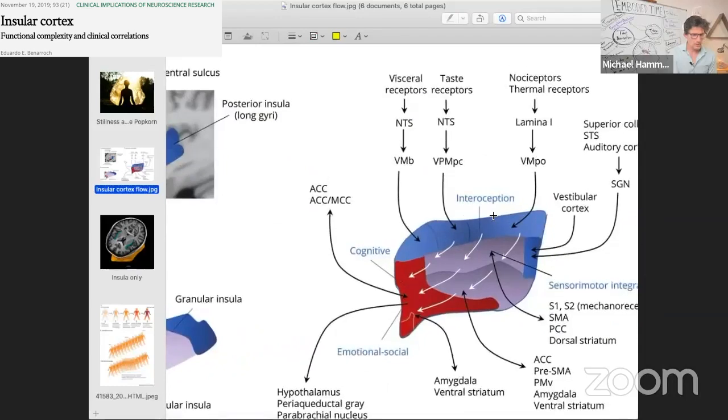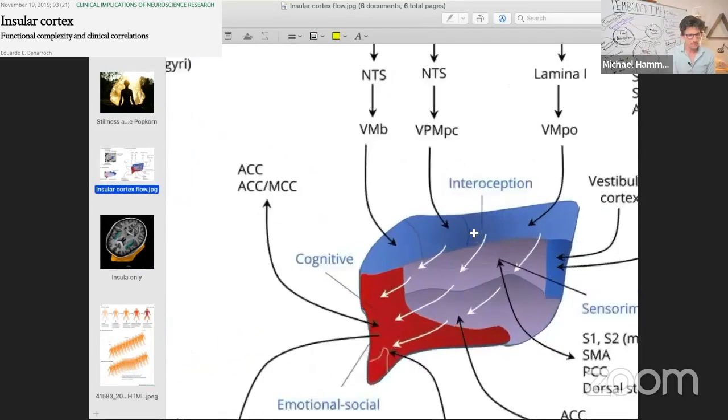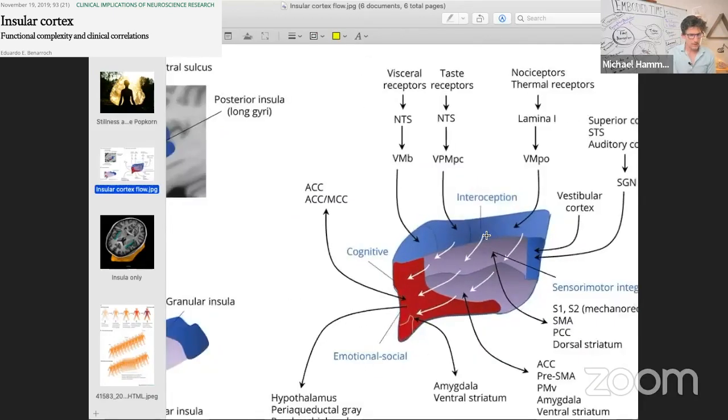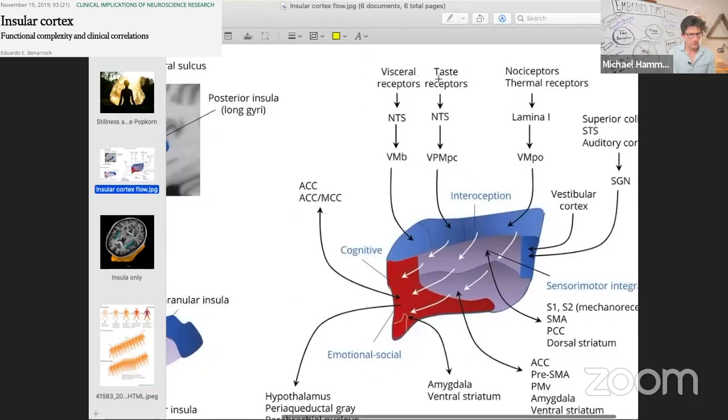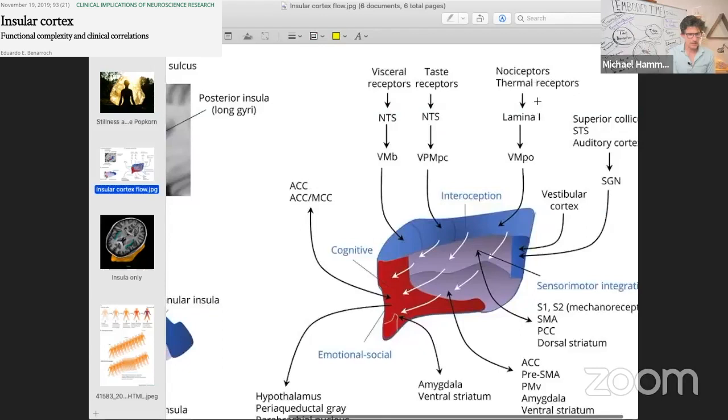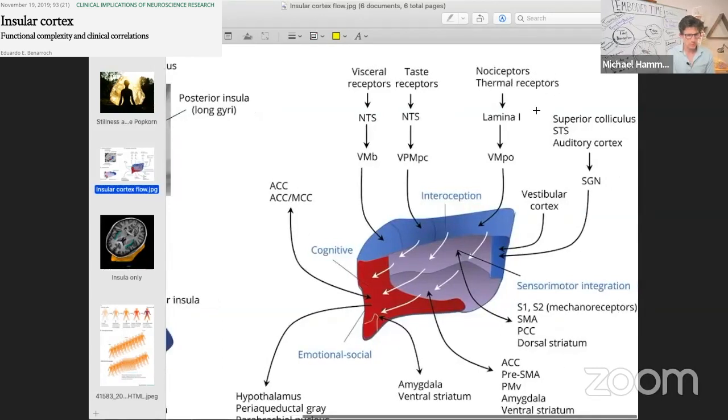The flow looks like this: interoception is happening here at the top of the insula, and the inputs are viscera, taste, pain or what we call nociception, temperature, certain parts of audition or sense of hearing, vestibular information.